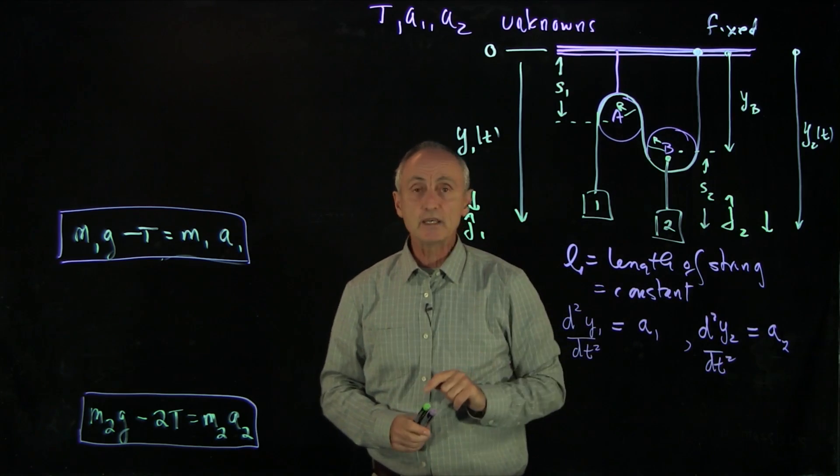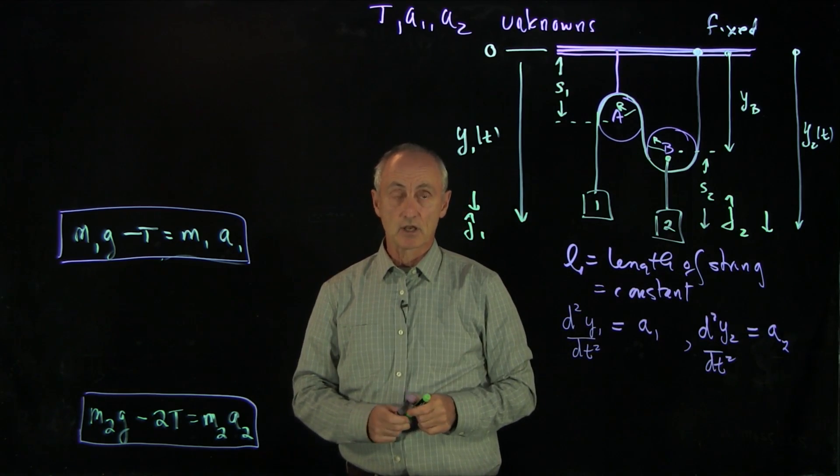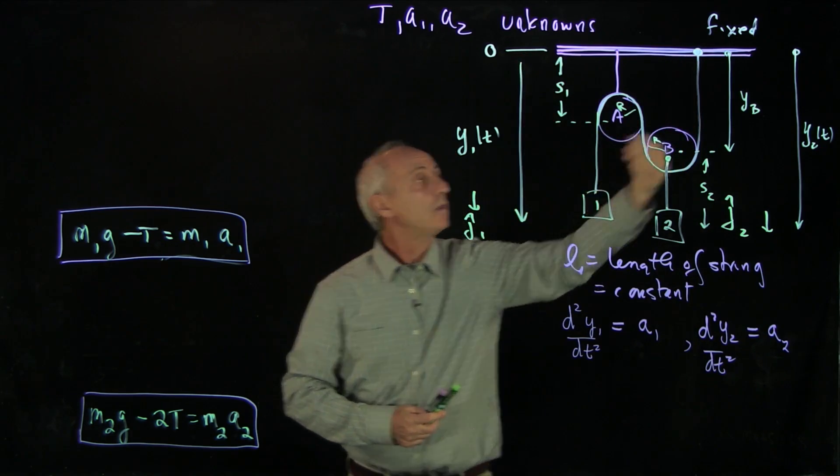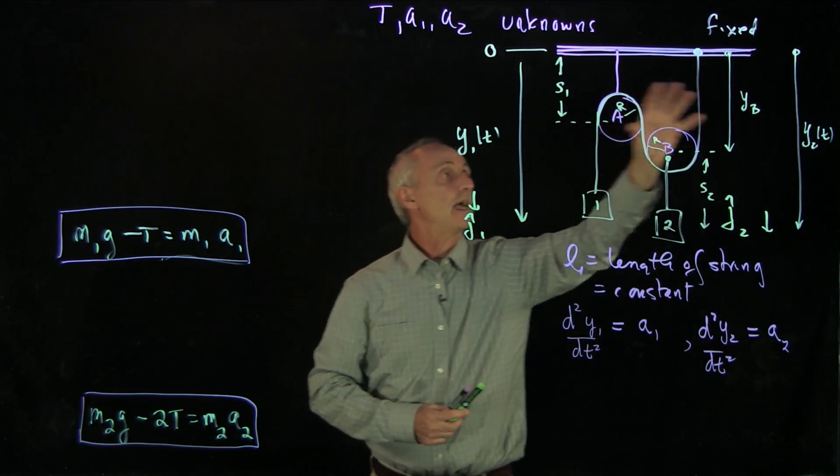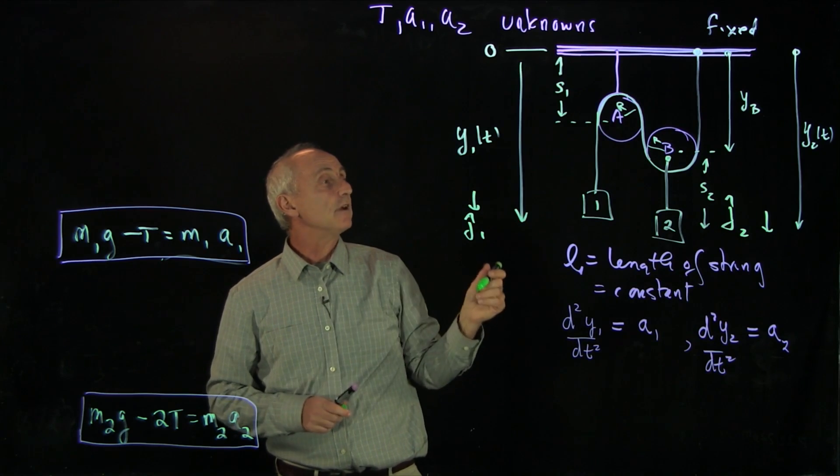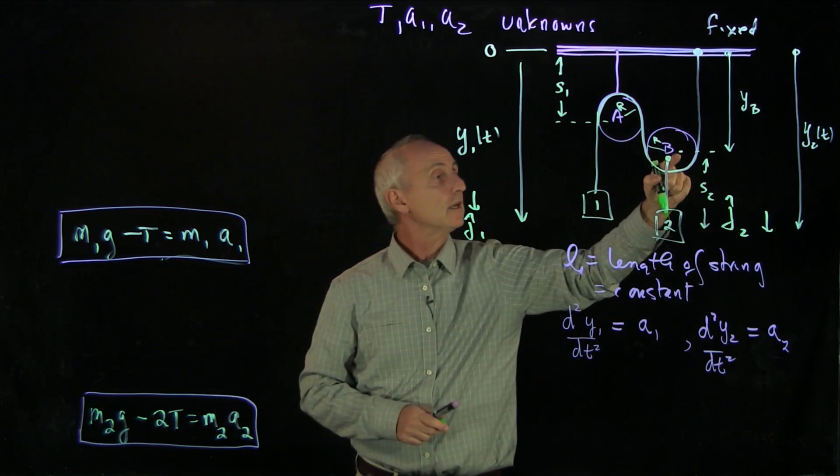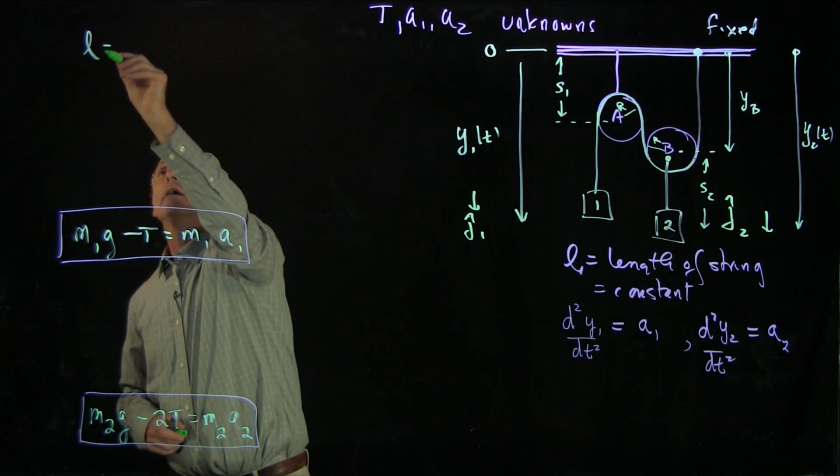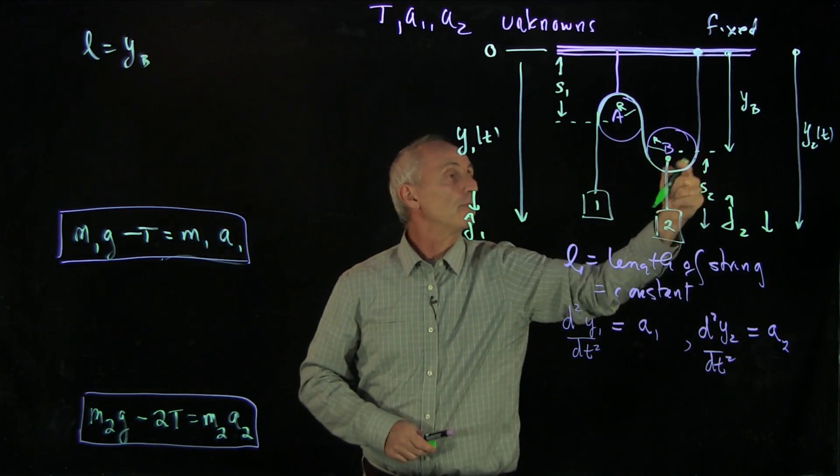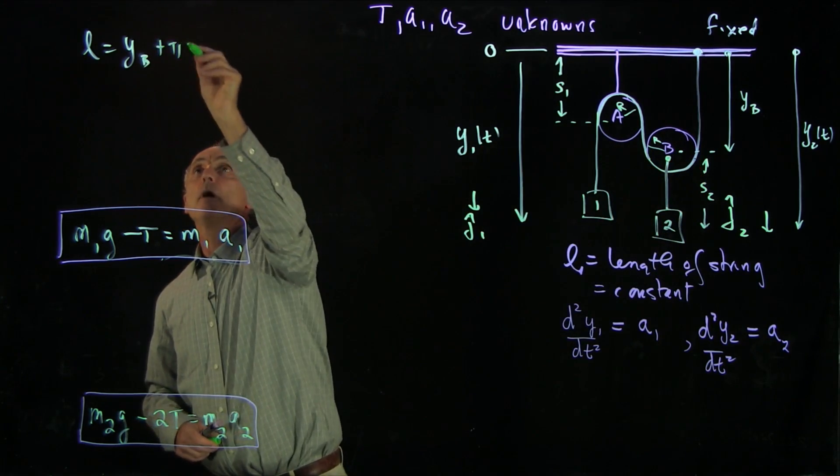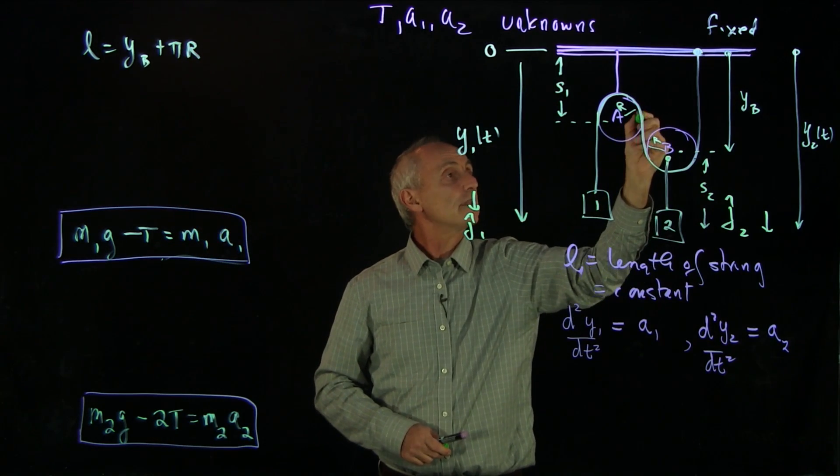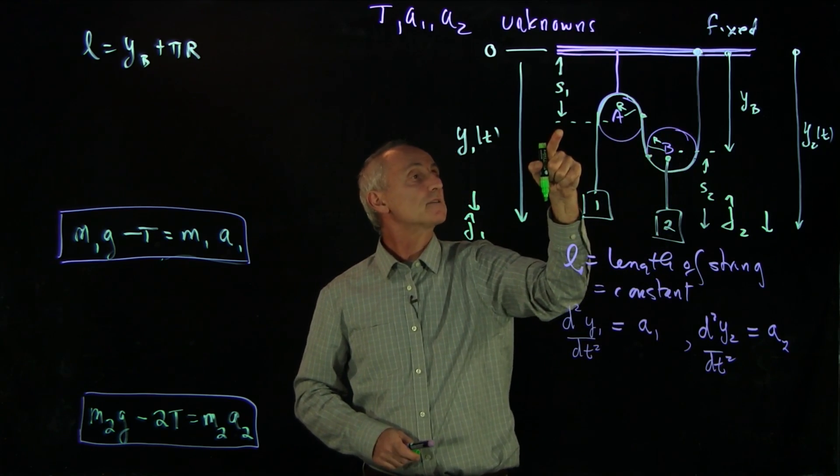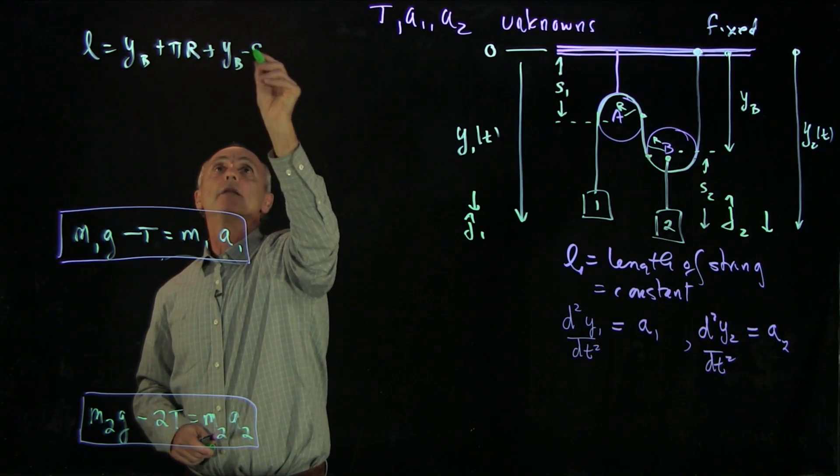Now let's look at our constraint condition that the length of the string is constant. So what we're going to do is try to see if we can express the length of the string in terms of all the coordinate functions and some of these ancillary quantities. So what we have here is that the length of the string is yb going down here. So the length of the string has a factor yb. It wraps around pulley b, so that's πr. And it goes up to this length here. Now this length is yb minus s1.